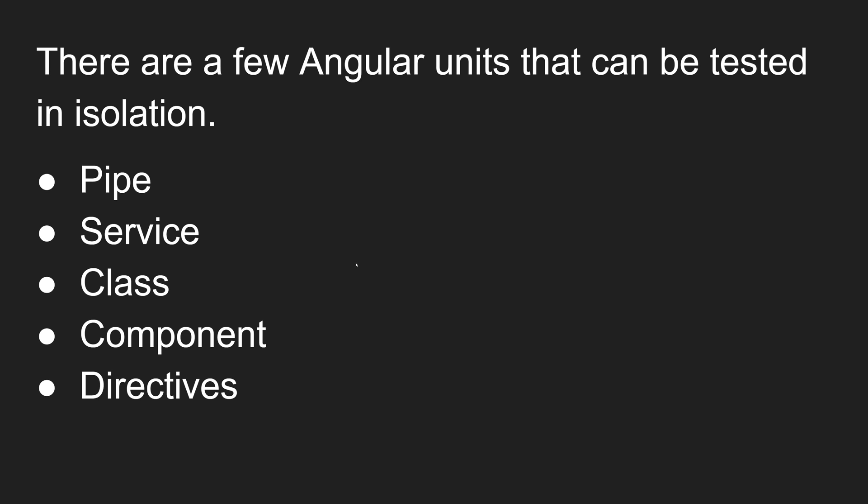Now, what are the Angular units that can be tested in isolation — meaning those free from other dependencies? The first one is a pipe. We can also do isolated unit testing for a service class, a component, and directives. These are all the units we can test as isolation unit tests.